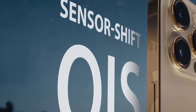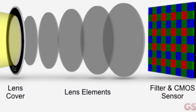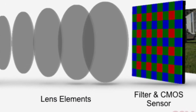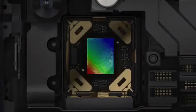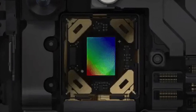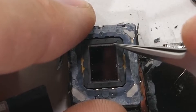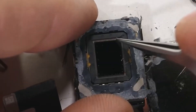Now let's talk about sensor shift stabilization. Below the camera lens system is the sensor, so instead of trying to stabilize multiple lenses, you can just stabilize the sensor — it's much easier because it's just one element. In this case, only the sensor moves instead of the entire lens assembly, and it can stabilize the image much better.